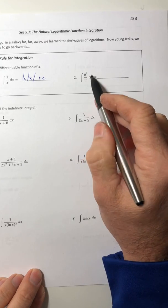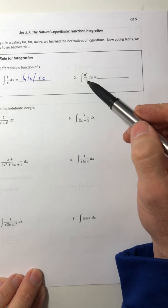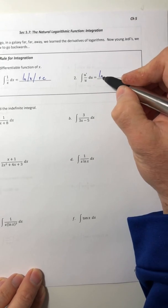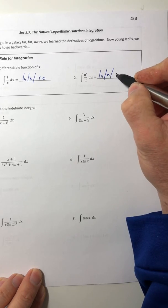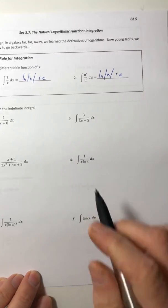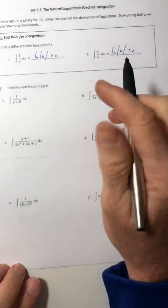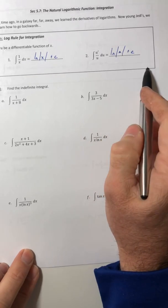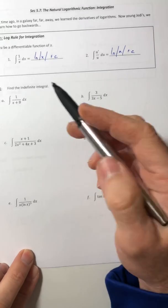But in general, if you look at your fraction, if the derivative of the denominator is on top, then that will integrate into the ln of the absolute value of u, or the denominator, plus c. Because that's how you take a derivative anyway. You take what's inside the ln, throw it in the denominator, and then put its derivative on top. So you're just reversing that process.